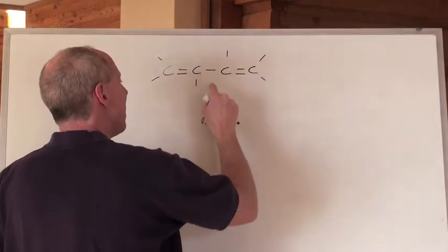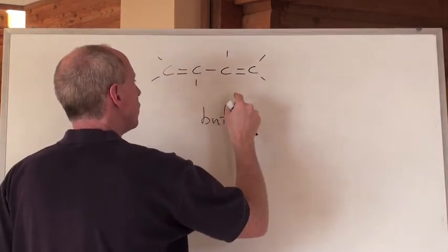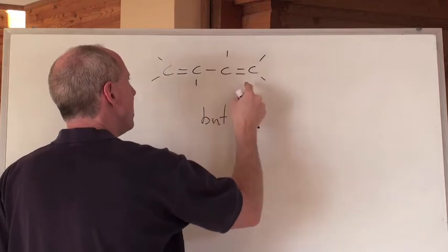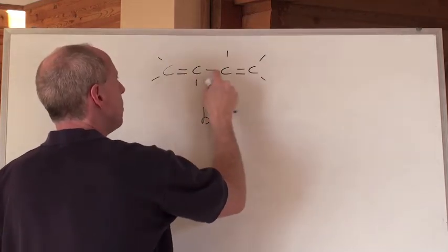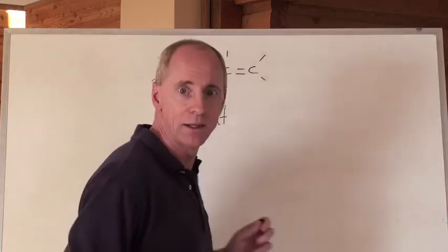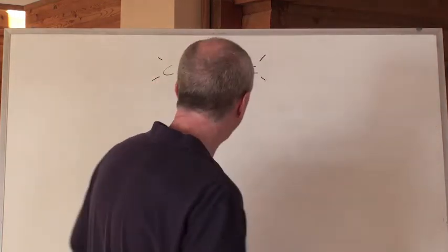All right. There's a butte, and then we've got eens. So, you know, there's a butte. Now, where are the eens? Well, there's two eens. There's an een at the first carbon, then there's an een at the third carbon, going in either direction.